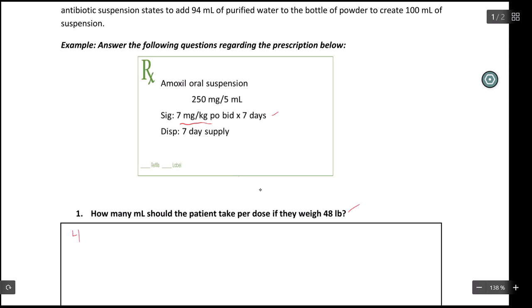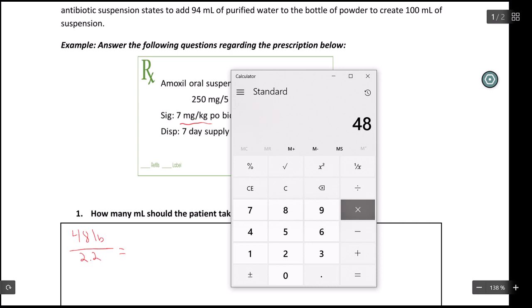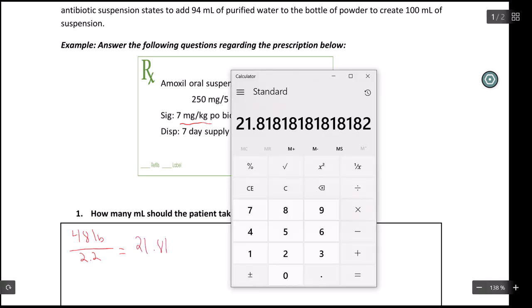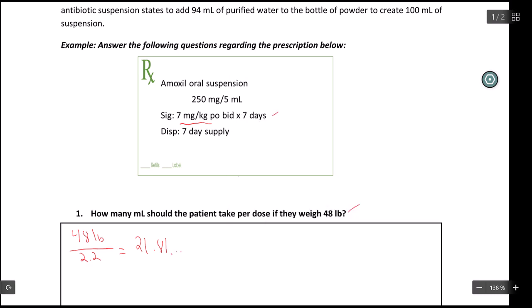We know very quickly we can take the pounds and divide pounds by 2.2, and we can get the kilograms of the patient. So if I take 48 and I divide that by 2.2, I'm going to get 21.81. And this is kilograms of the patient.